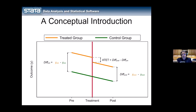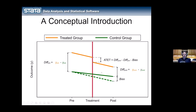This technique depends heavily on a particular assumption: that the two trajectories — in the treatment group and the control group — are parallel. It's called the parallel trajectories assumption. If the slopes are not parallel, we'll bias our estimate of the ATET. The ATET is the effect of the treatment on the trajectory of the outcome in the treated group.